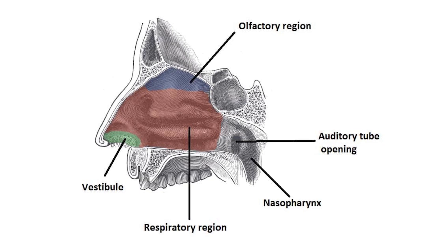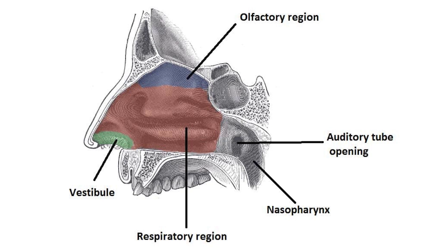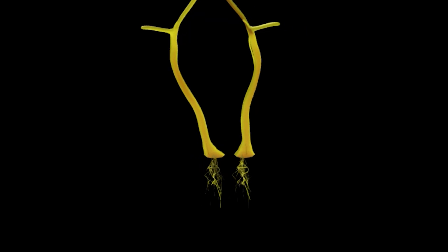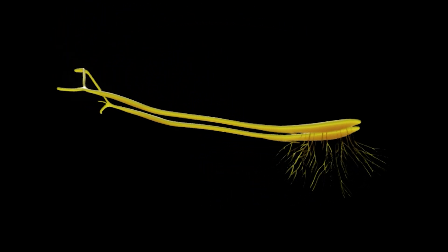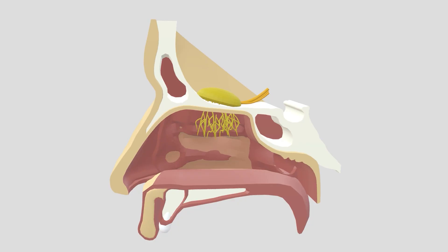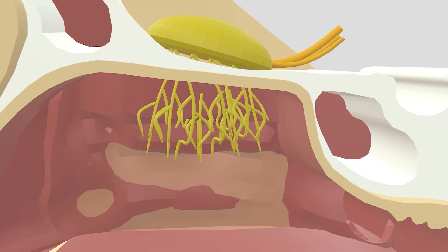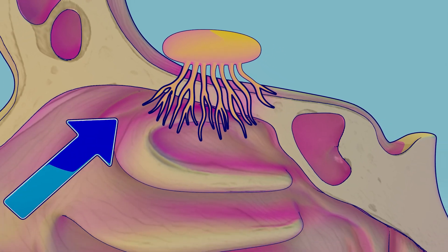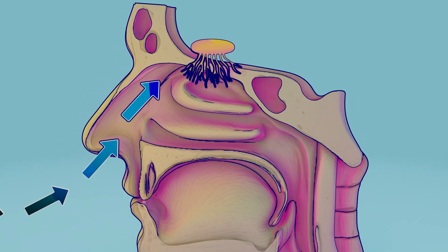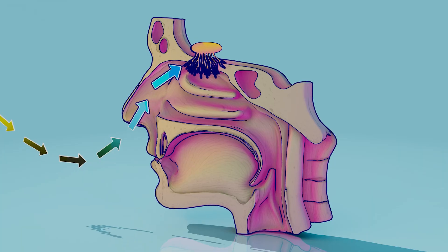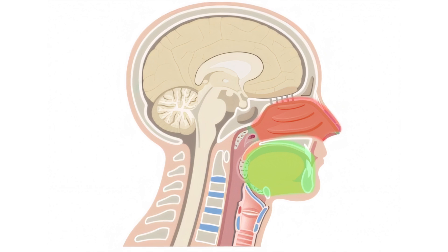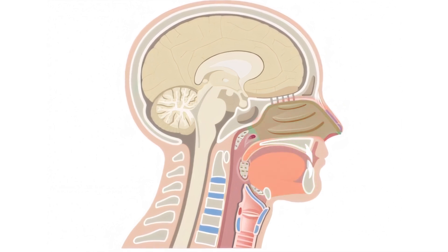At the top of the nasal cavity is a special area called the olfactory region, which contains the receptors responsible for our sense of smell. These receptors are part of the olfactory epithelium, a thin layer of tissue that detects odor molecules in the air. When we breathe in, air carrying different smells travels up to this area, and the receptors send signals to the olfactory bulb — a structure located just above the nasal cavity in the brain — which then processes these signals and identifies the smell. This sense of smell is closely connected to our sense of taste, which is why food seems tasteless when you have a blocked nose.